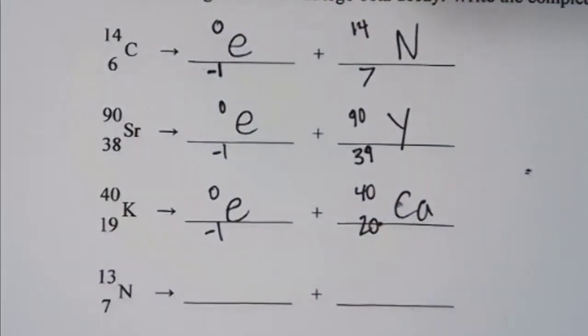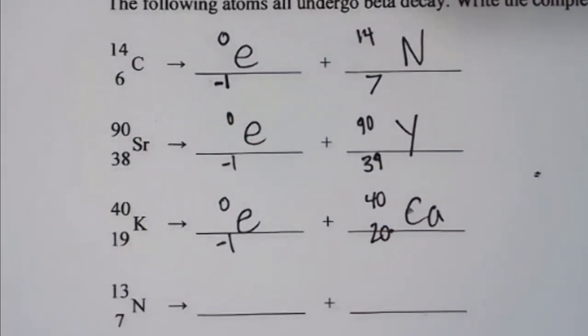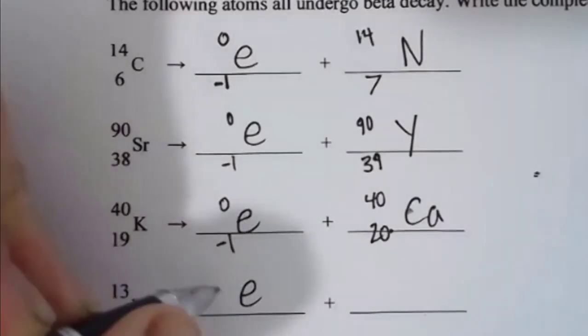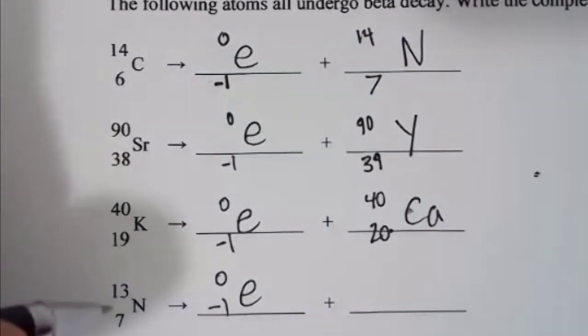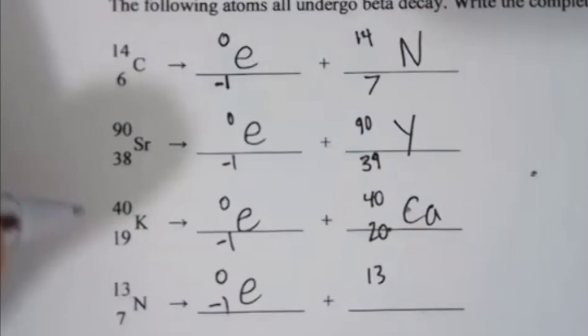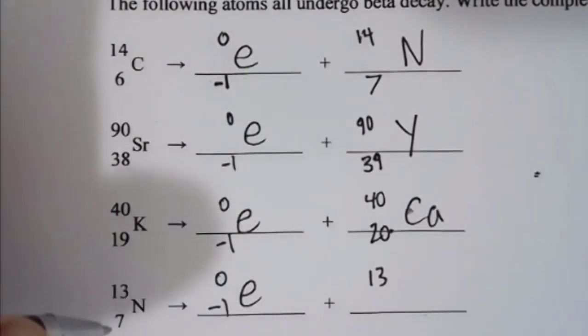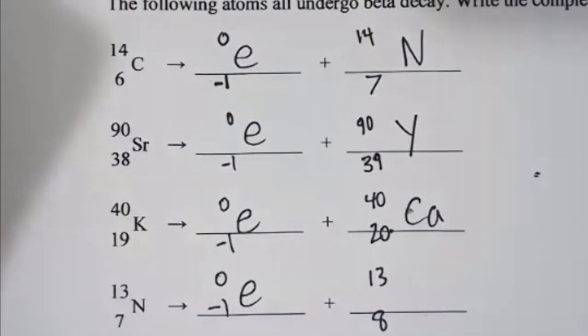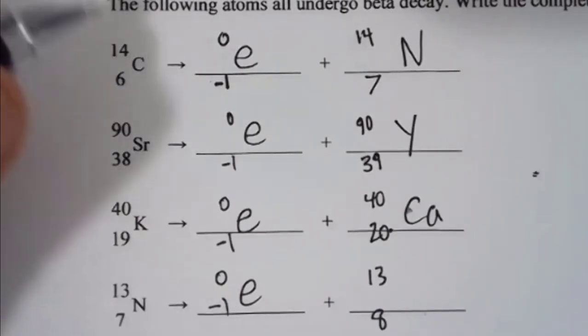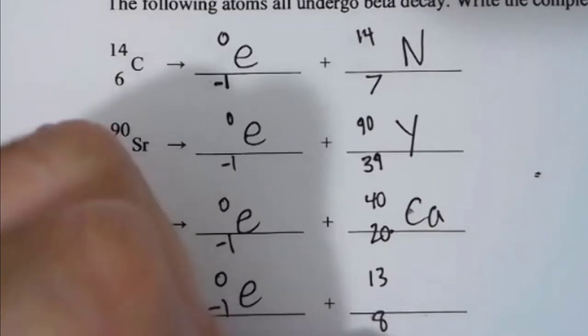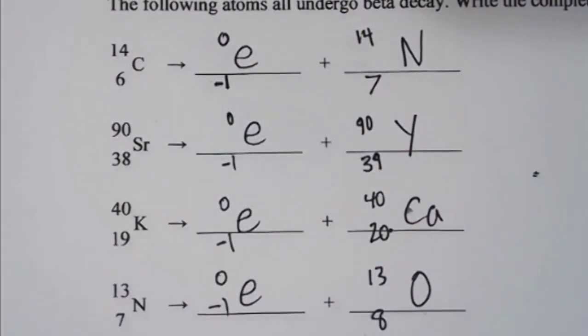You need to be able to do these yourself using that simple rule. When we have a high-energy electron, the mass stays the same and the atomic number increases by one. Looking at the next example, we've gone from nitrogen to element eight, which is oxygen.